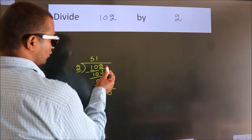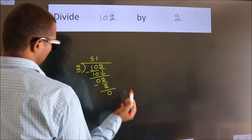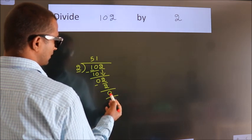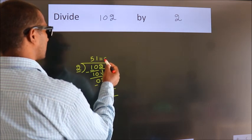After this, no more numbers to bring down. And we got remainder 0. So this is our quotient.